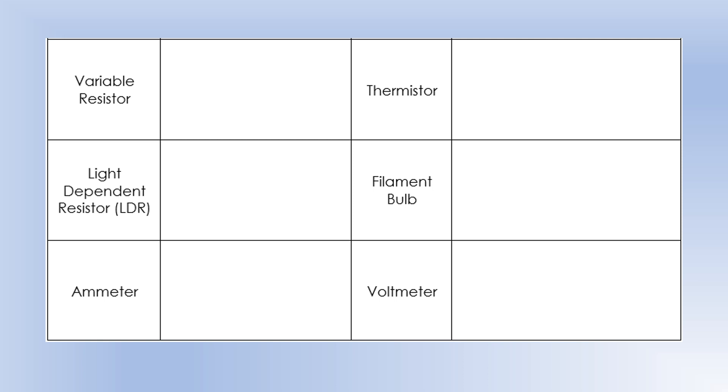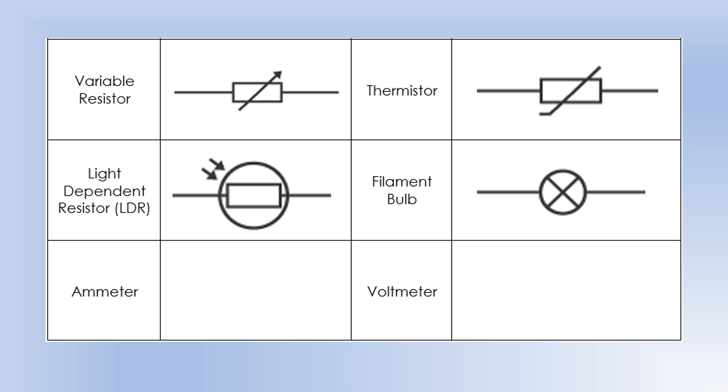And moving on, to finish off the circuit symbols we're going to look at today. So a variable resistor is very much like a resistor, but with an arrow through it to show that it's variable. A thermistor, or a temperature-sensitive resistor, looks like this. So this device's resistance will change with temperature of the surroundings. A light-dependent resistor will change its resistance depending on the light intensity on the LDR. So it looks like this. So again, a resistor, but with arrows coming in, showing that it absorbs light. A filament bulb, a very common component we use, looks like this. An ammeter, a circle with an A in it, and a voltmeter, a circle with a V in it. And that concludes the circuit symbols we're going to look at.